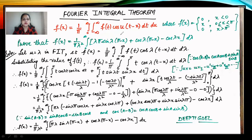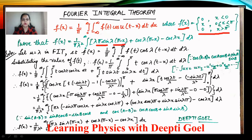Let us take a problem. We have to solve using the Fourier Integral Theorem where the function is given as: f(x) = 0 when x < 0, f(x) = x when 0 ≤ x ≤ π, and f(x) = 0 when x > π. We have to prove that f(x) = (1/π) ∫₀^∞ [λπ sin(λπ) / λ²] · [λπ sin(λ(π−x)) + cos(λ(π−x)) − cos(λx)] dλ.